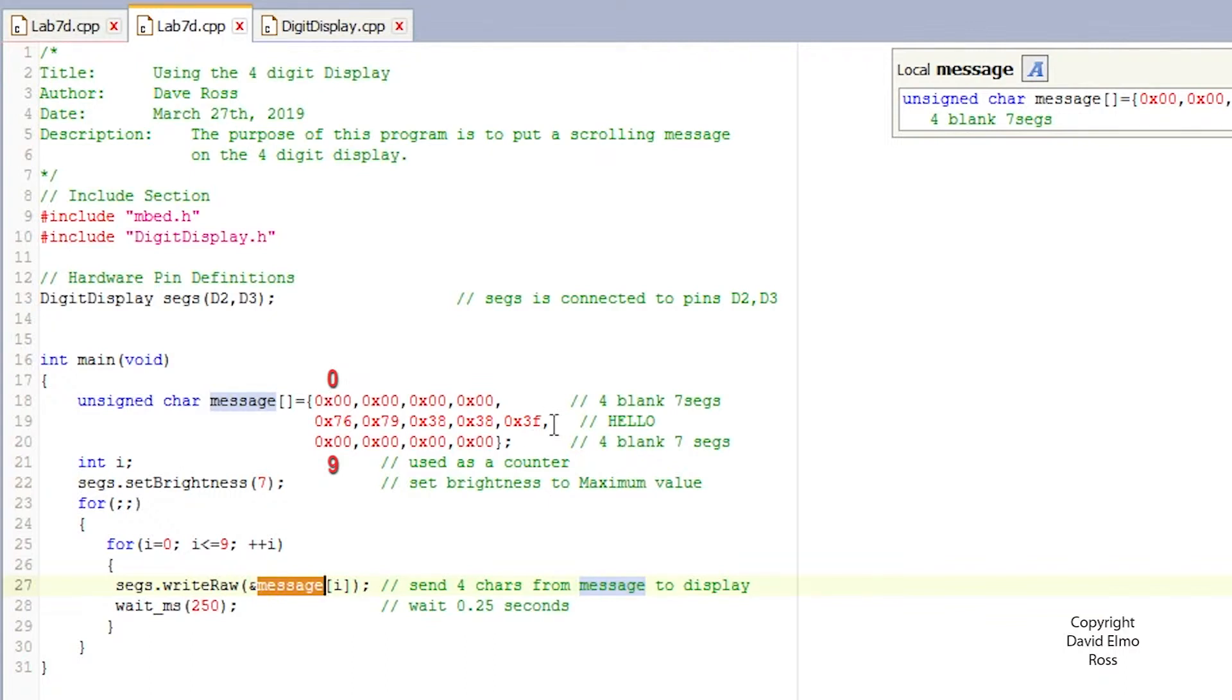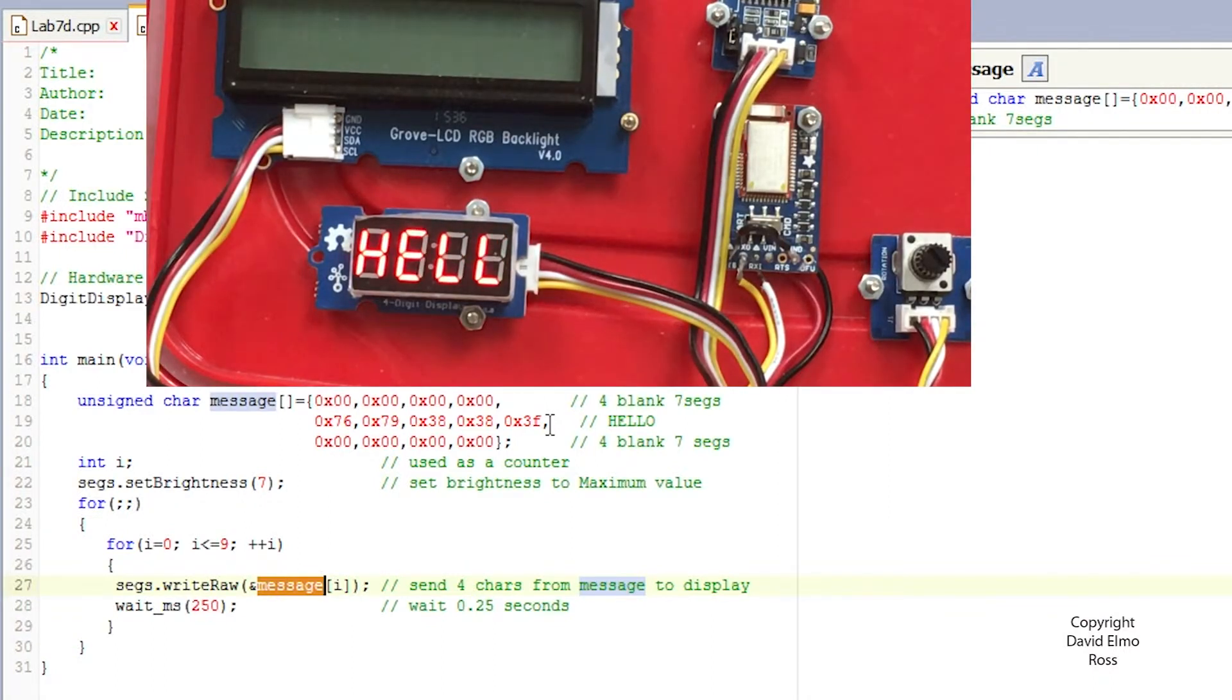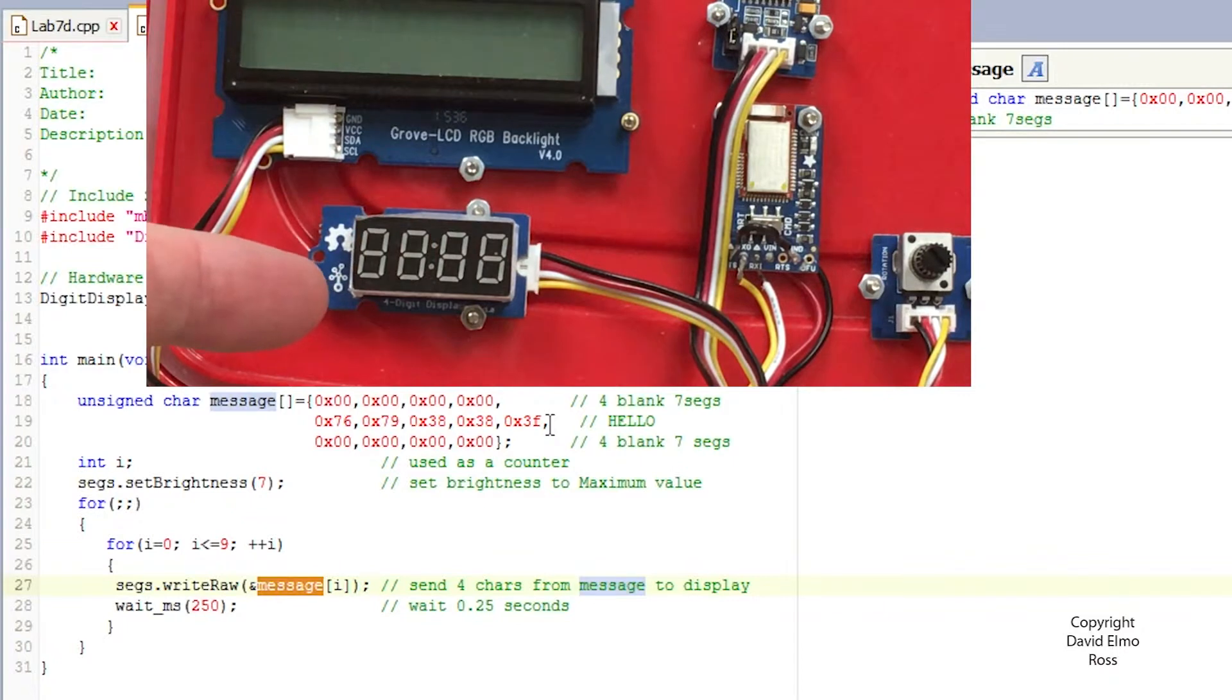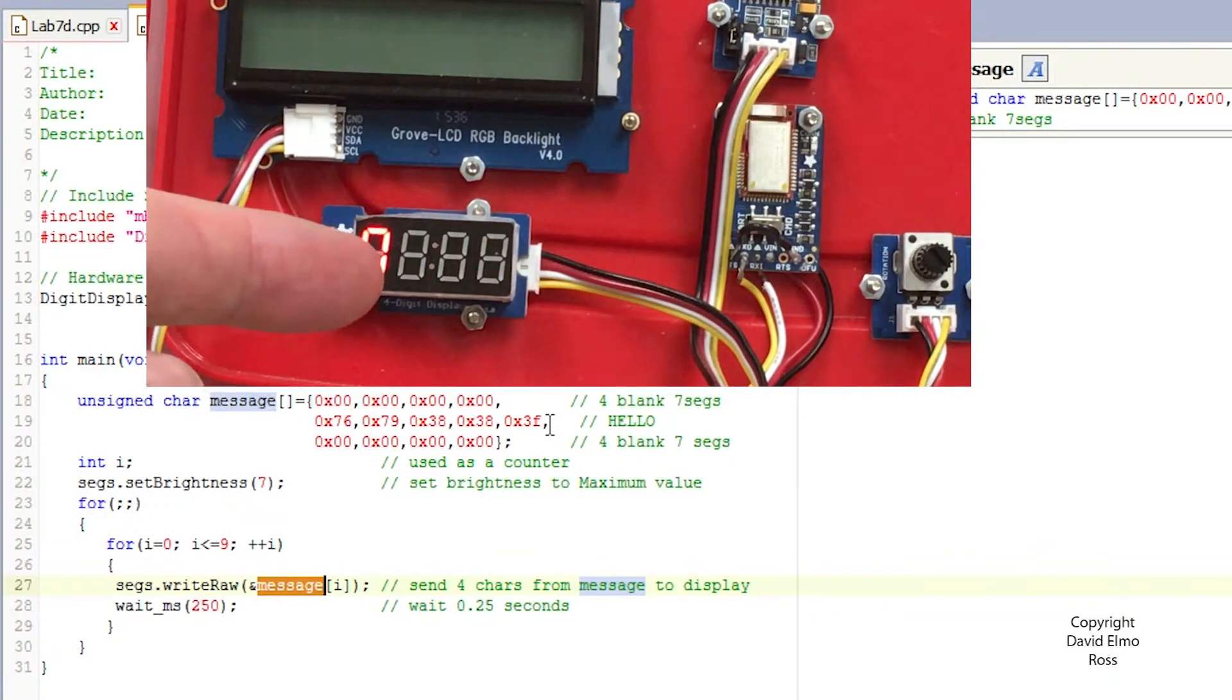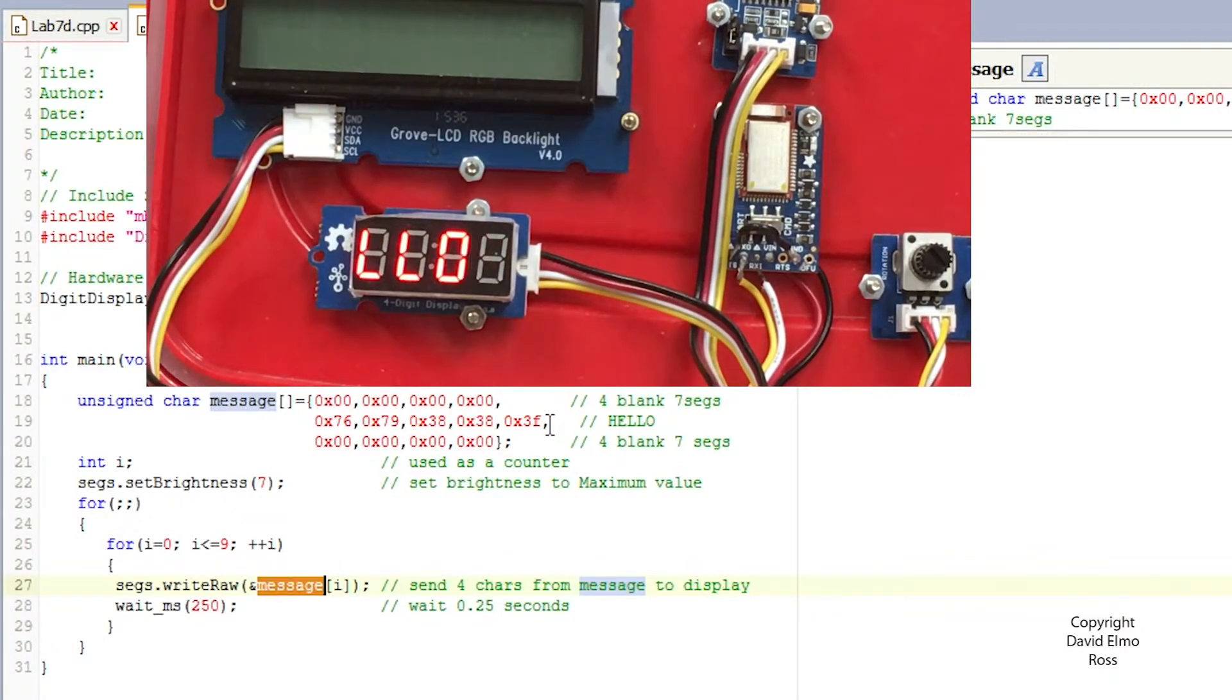Now that's the program. Let's take a look and see how it works. So we can see here, right at the start, it's got four blanks coming in, one, two, three, four, and then hello scrolls across, four blanks, and it starts over again. And that's how you make a scrolling display using our four-digit display.